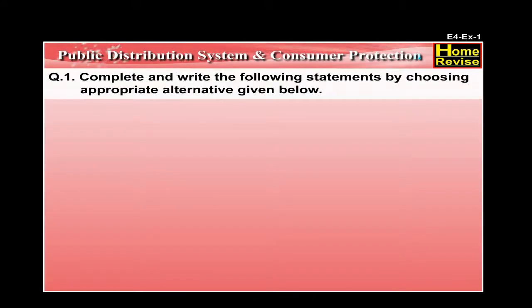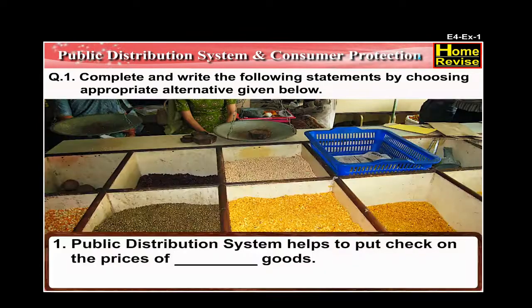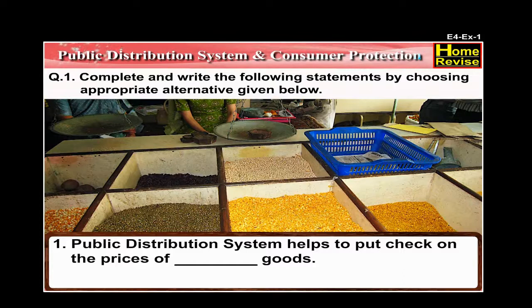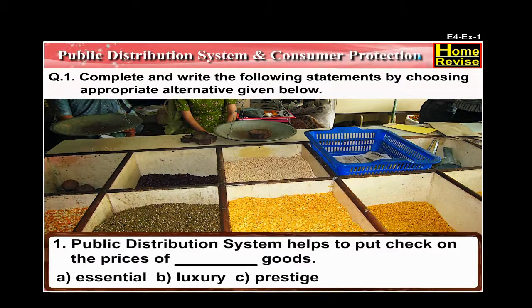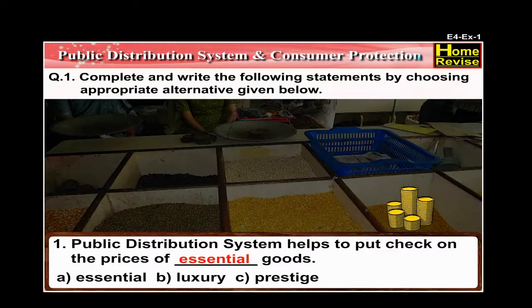Exercise. Question No. 1: Complete and write the following statements by choosing the appropriate alternative given below. Number 1: Public distribution system helps to put a check on the prices of dashed goods. Options are Essential, Luxury, or Prestige. The answer is: the public distribution system helps to put a check on the prices of essential goods.